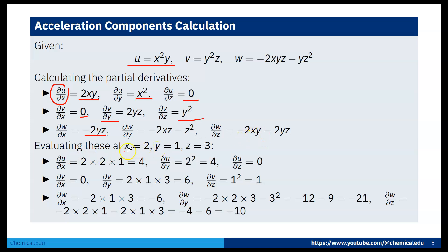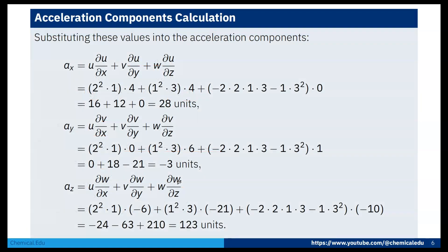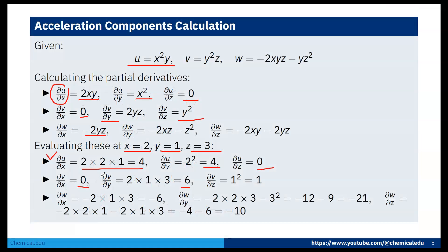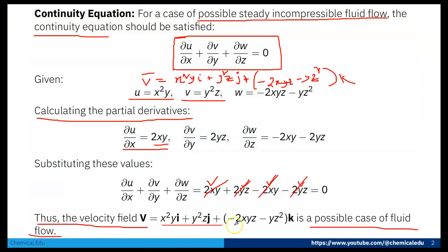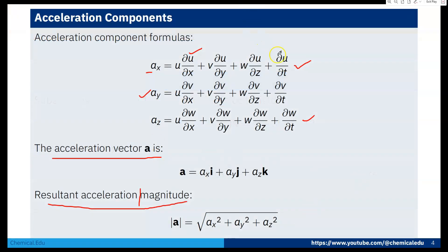Substituting x=1, y=2, z=3 gives the component values: ∂u/∂x = 4, ∂u/∂y = 1, ∂u/∂z = 0, ∂v/∂x = 0, ∂v/∂y = 6, and so on. Also, since there is no t-term in the velocity field, this is a steady-state case, so ∂u/∂t = ∂v/∂t = ∂w/∂t = 0.